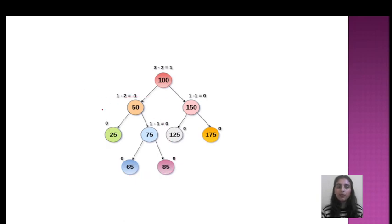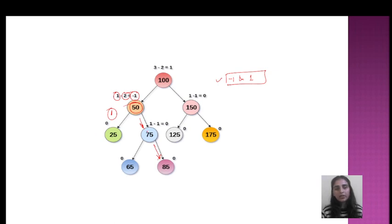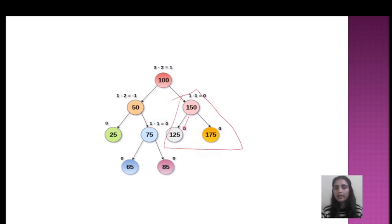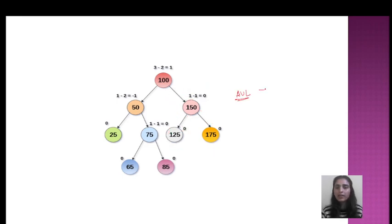For the subtree rooted at node 50, the height on one side is 1 and the other side is 2, so the balance factor is 1 minus 2 equals minus one, which is within the valid range of minus one to plus one. For leaf-level subtrees with single nodes, height is 1 on both sides, so 1 minus 1 equals 0. This confirms it is a balanced AVL tree. I hope you understand every step, thank you so much.